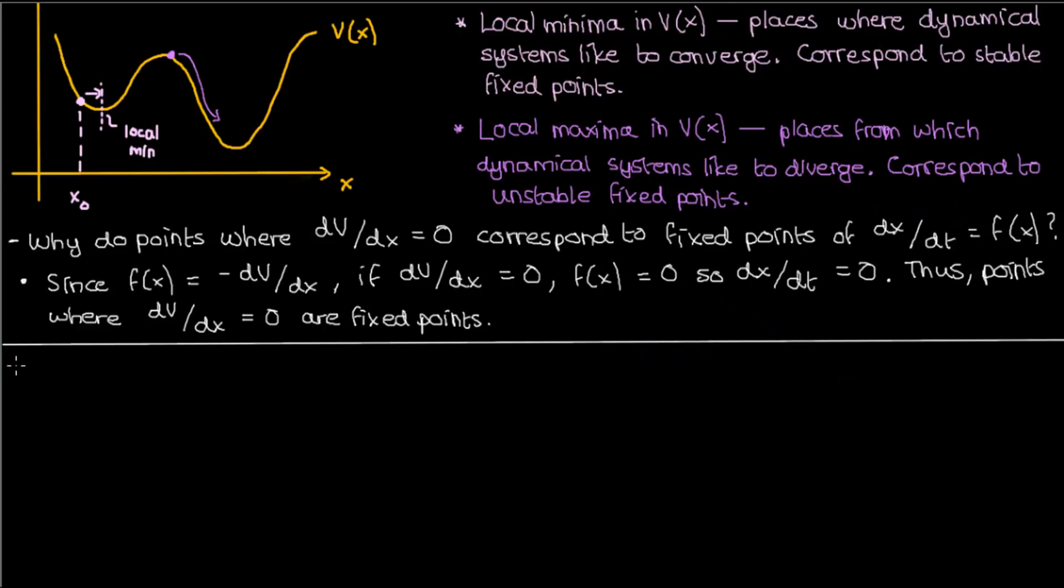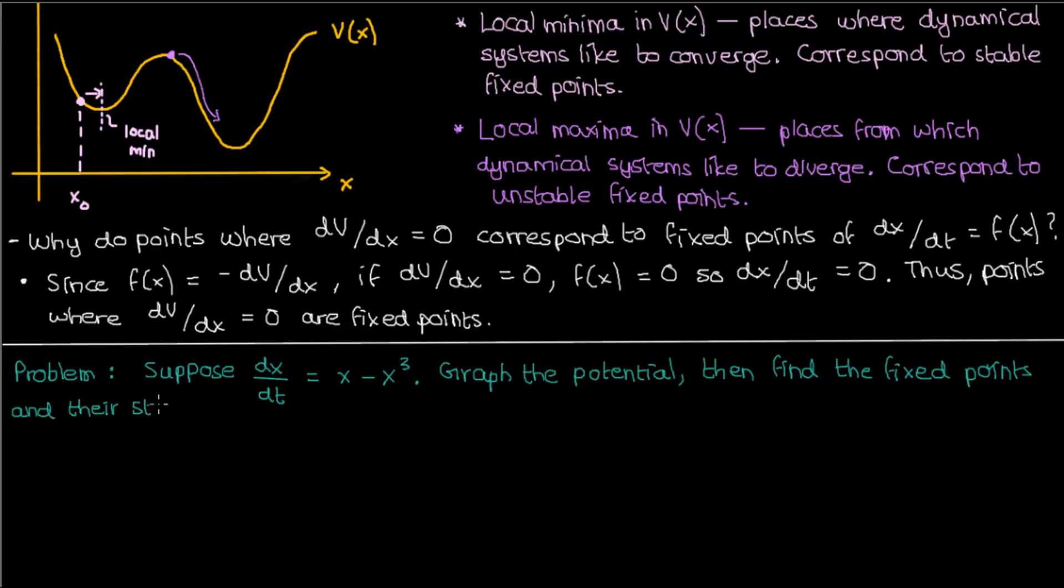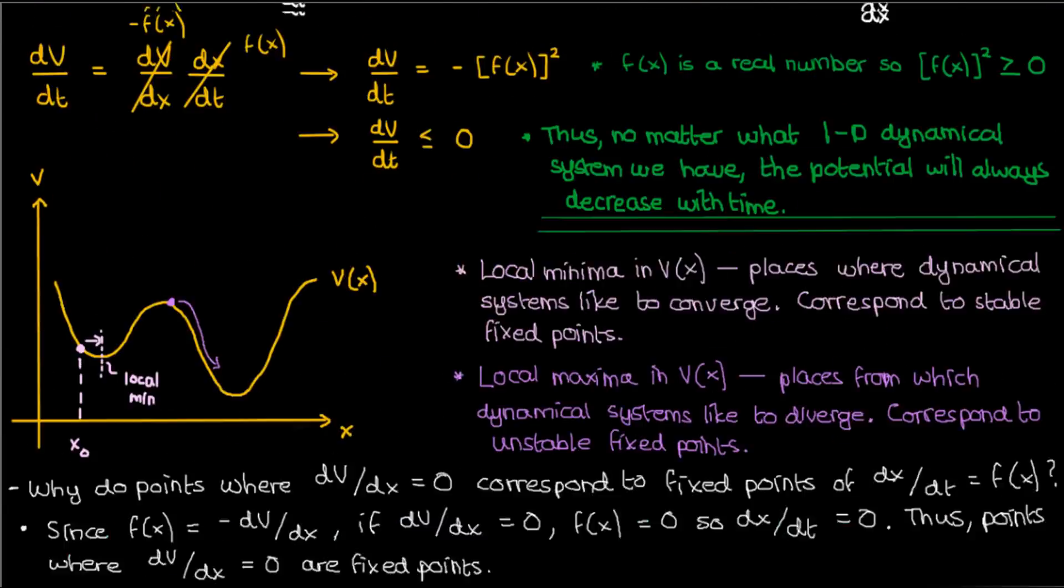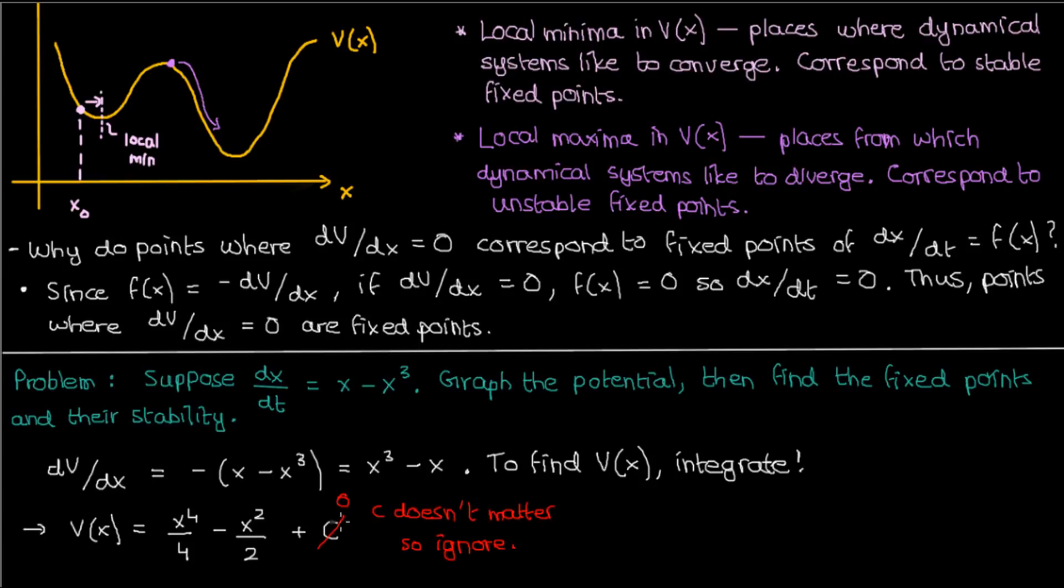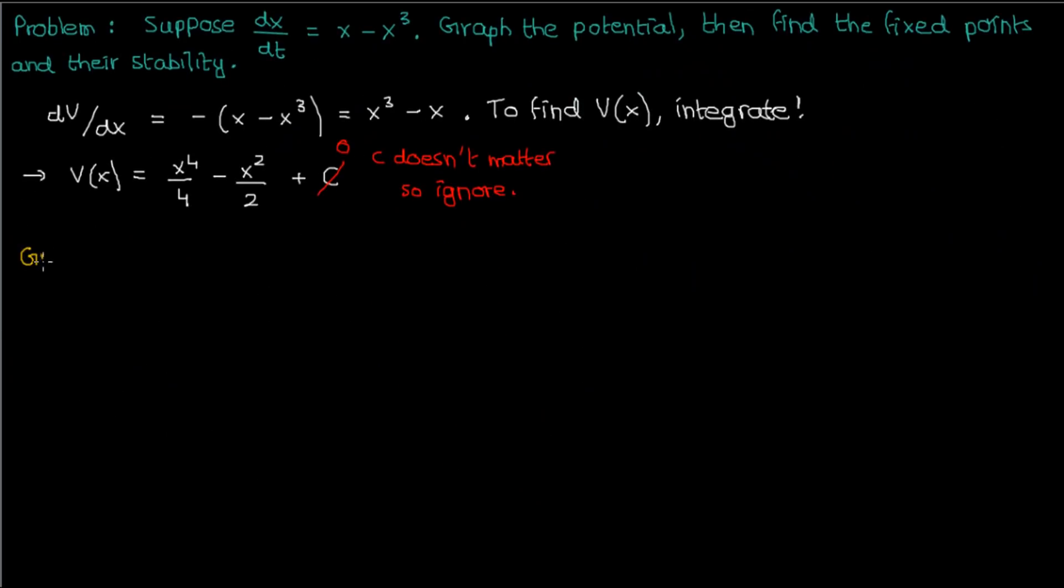Let's now go ahead and apply this intuition to a real problem. The problem goes like this: suppose dx/dt equals x minus x cubed. So my function f(x) is x minus x cubed. Our task is to graph the potential and then find the fixed points and the stability of those fixed points of this dynamical system. So let's get started. We know from the definition of potential that dV/dx equals negative of (x - x³), which is x³ - x. If we want to plot the potential as a function of x, all we have to do is integrate this derivative. And when we do that, we'll get x⁴/4 minus x²/2 plus a constant. Now it doesn't matter what value our constant takes on, so we can just set it to zero and go about our business.